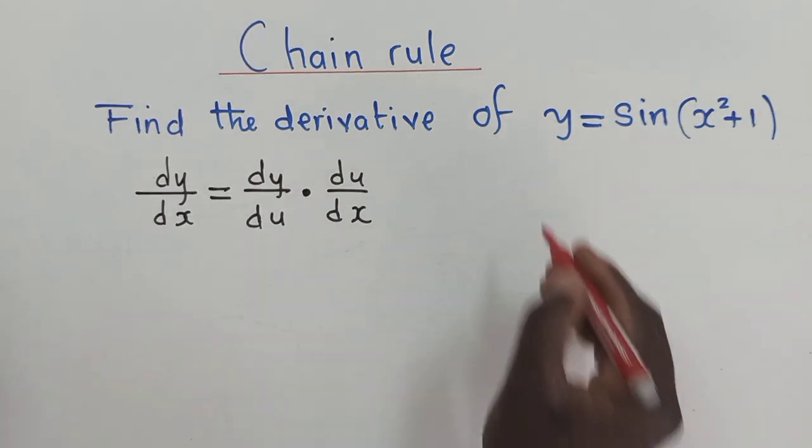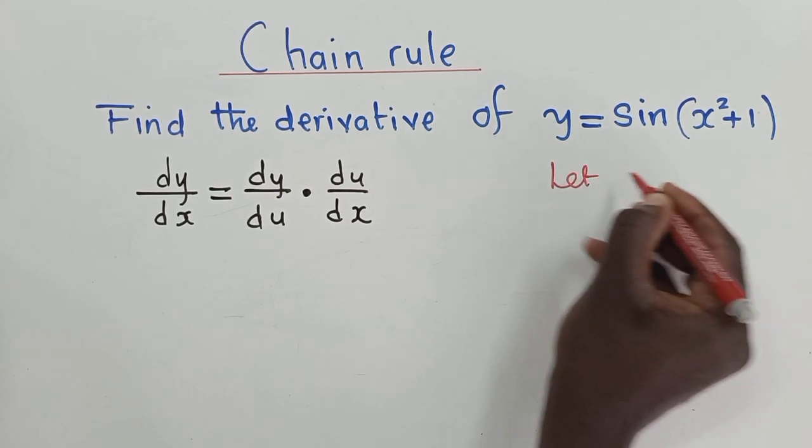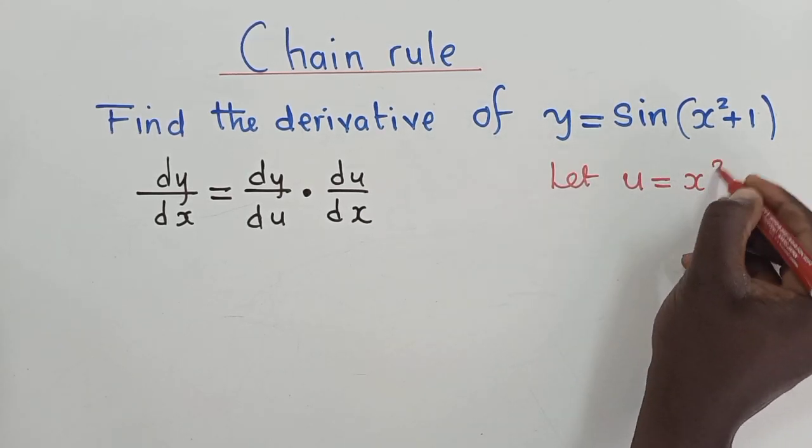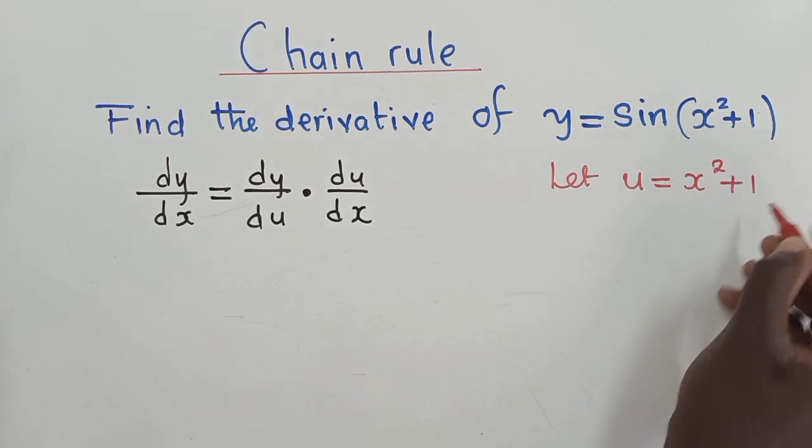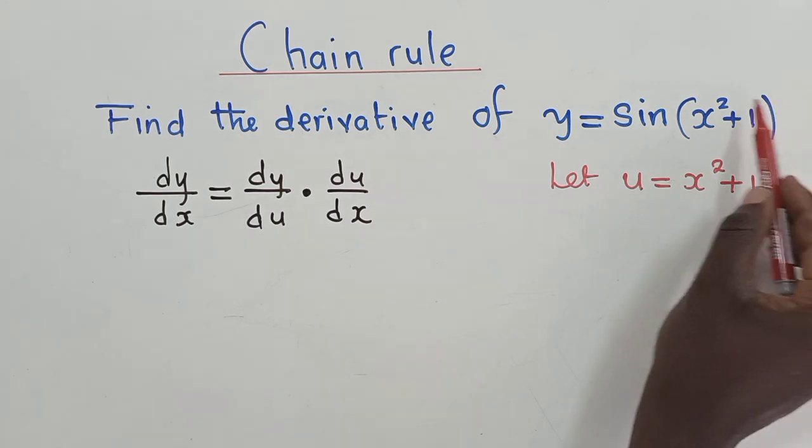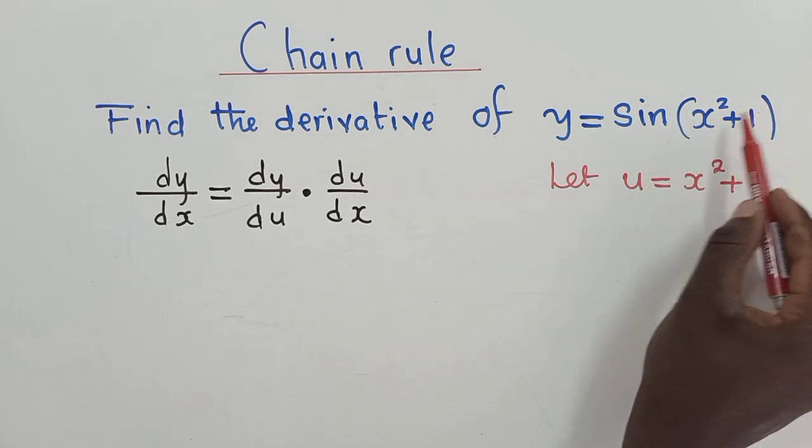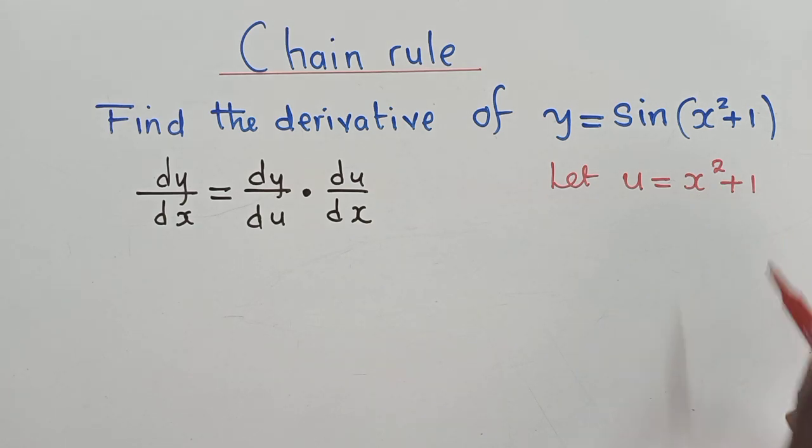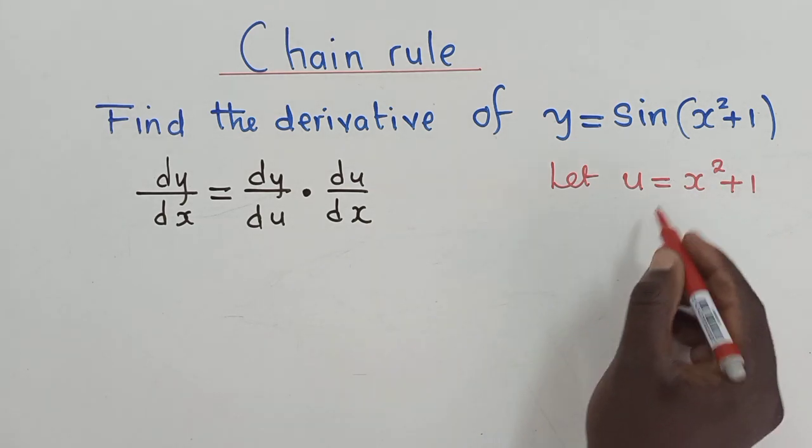So let's do this. We let u equal x power 2 plus 1. So whatever is inside. Remember this is a composite function. So whatever is inside here, we let it be equal to x squared plus 1.